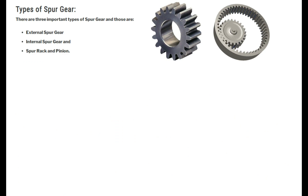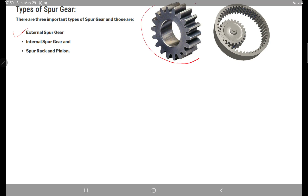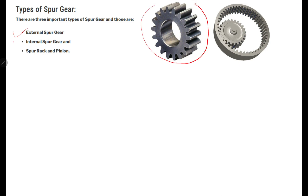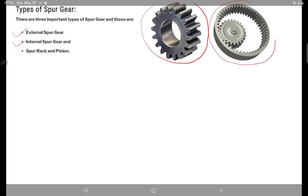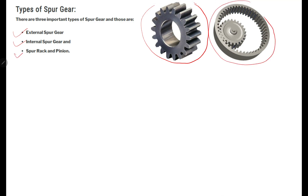Let us see the types of spur gears. There are three important types: first is external spur gears, second type is internal spur gears, and third type is rack and pinion type of spur gears.